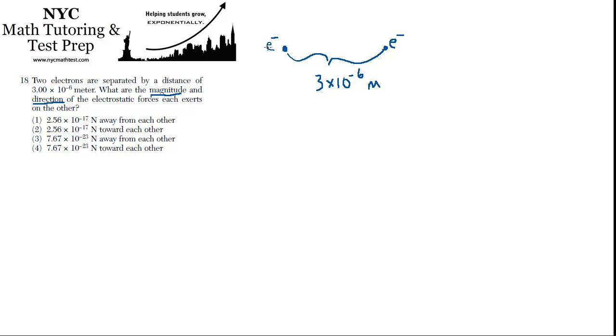They repel, right? Opposites attract and like charges repel. So you already know that the electrostatic forces they're exerting on each other will push them apart. Right off the bat, without doing any math, you can eliminate choices 2 and 4 because those would mean they're being attracted or pushed together - they're actually going to be pushed apart.